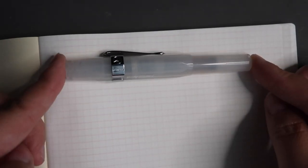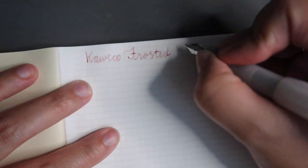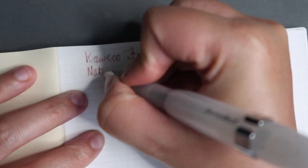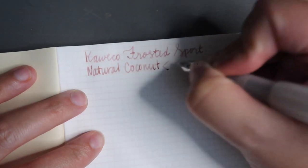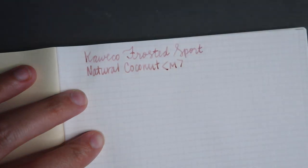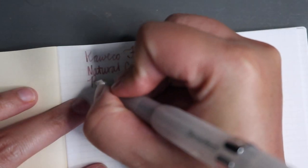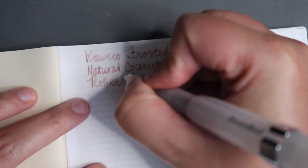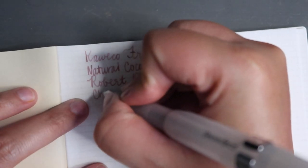My first pen is my Kaweco Frosted Sport in Natural Coconut. This is a medium nib and the ink I am using is Robert Oster Cherry Blossom. So scripture, I did ask God what scripture should I start with. Part of my channel is not only talking about fountain pens, but truly to share the word of God with everyone and to share the good news.